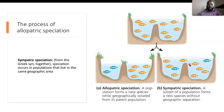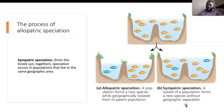Allopatric speciation is important for understanding sympatric speciation. Sympatric — from the Greek 'syn' meaning together — refers to speciation that occurs in populations living in the same geographical area. Allopatric speciation happens as a population forms a new species while geographically isolated from its parent population, whereas sympatric speciation occurs as a subset of a population forms a new species without geographical separation.